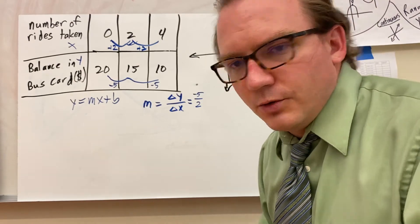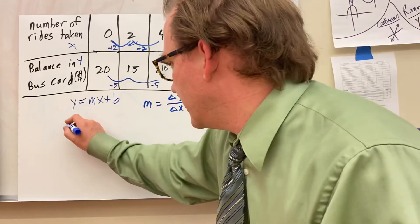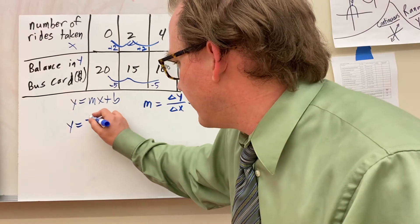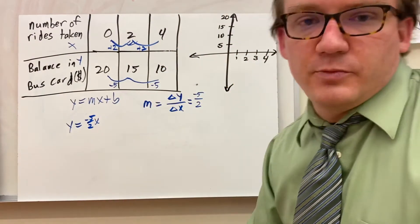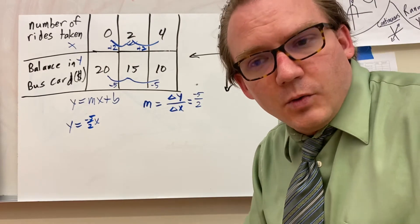What I do is this is now my slope. So I'd write an equation y equals negative 5 halves x. And then I have to add my b, or maybe I subtract it because it's negative. What's my b term?